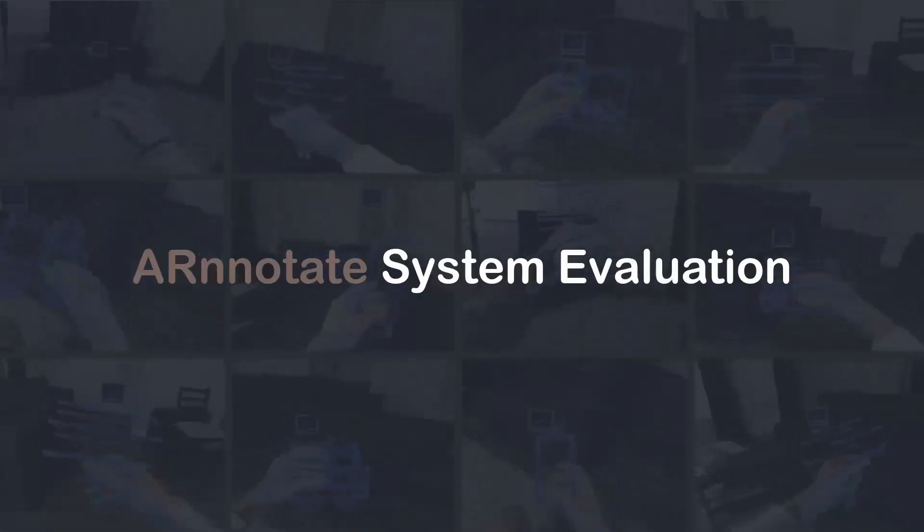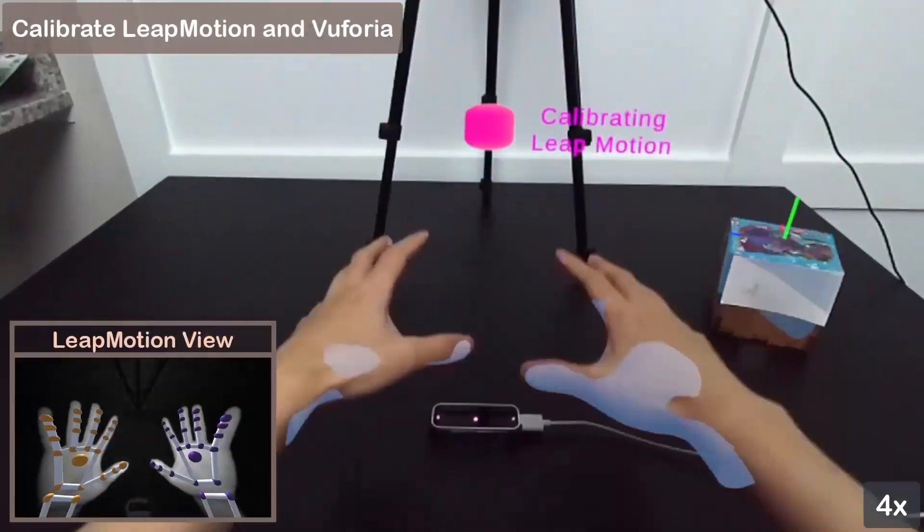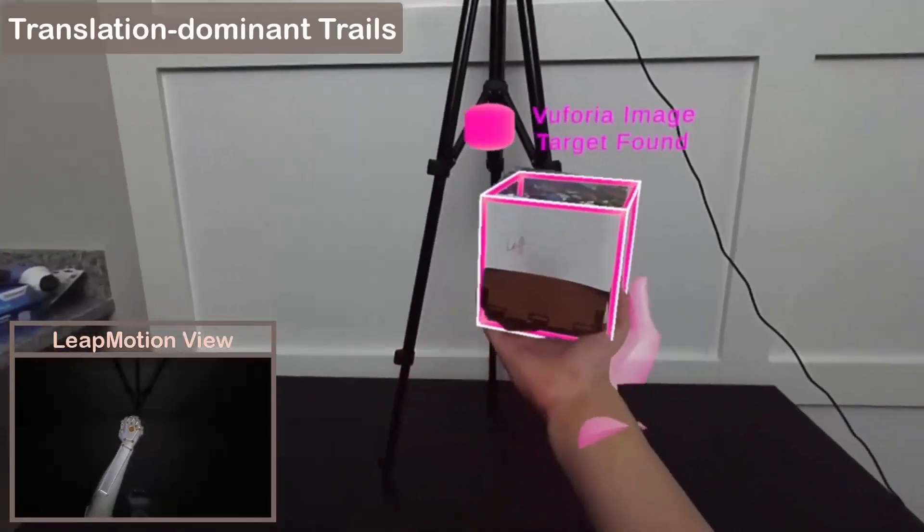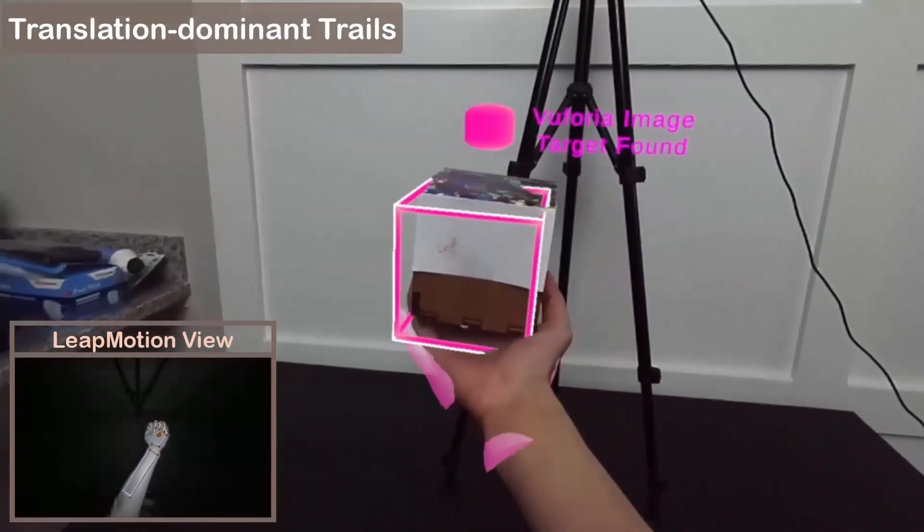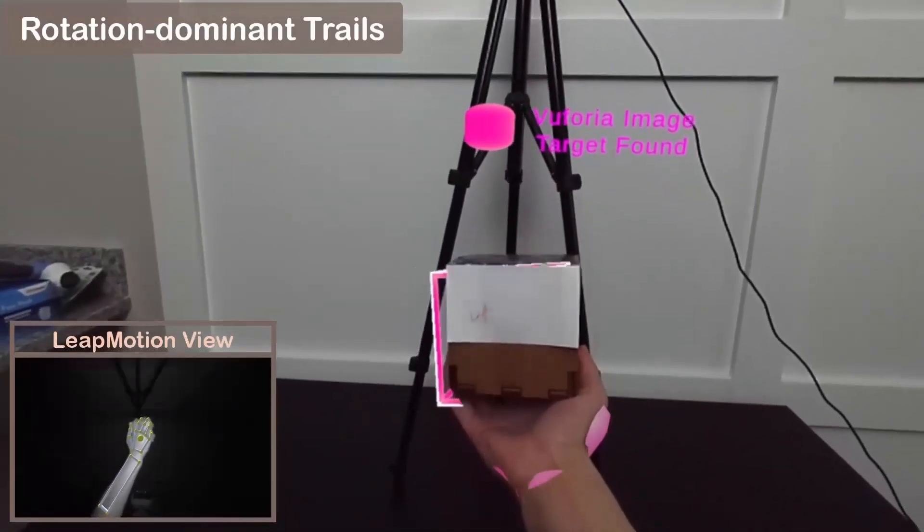We conducted a two-session user study to evaluate the quality of the dataset collected by Arnotate. In the first session, we calculated the spatial accuracy of the labels generated after all the post-processing steps. We used a Leap Motion controller and a webcam with a Fiducial image marker to provide the ground truths of the 3D hand and object poses.